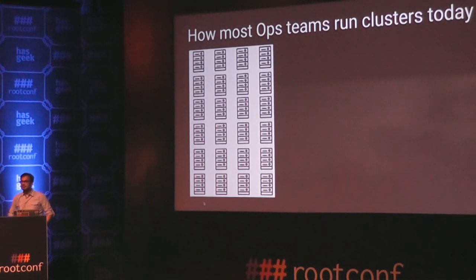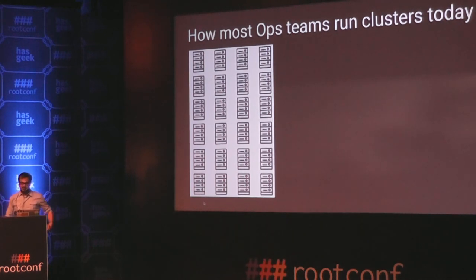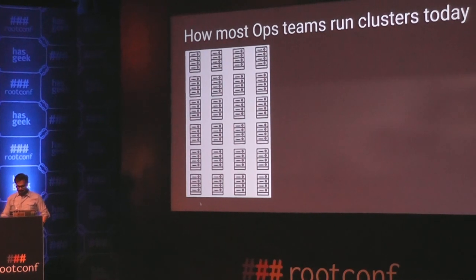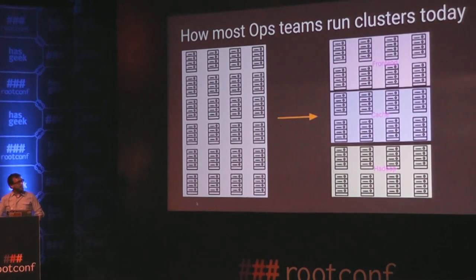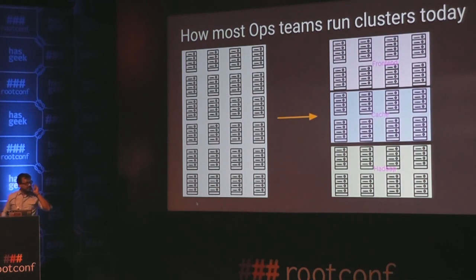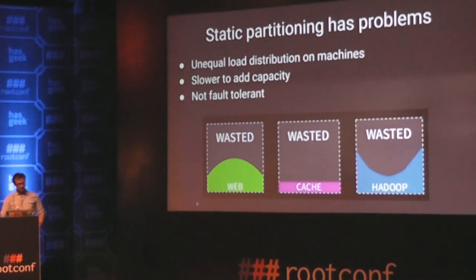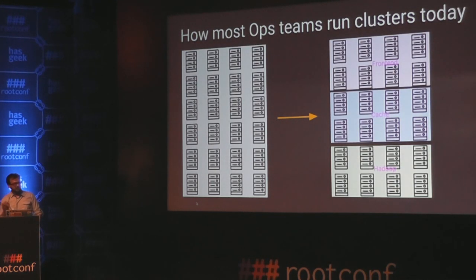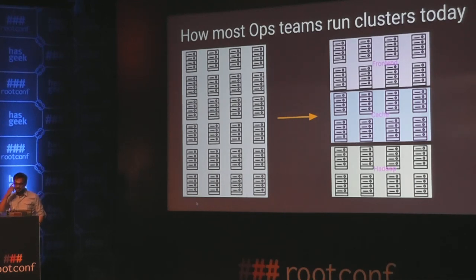This is how most operations teams run a cluster today. They start with a bunch of machines or virtual machines and then statically provision them to certain roles — for example, front-end, cache, Hadoop. This is called static partitioning: you assign a set of machines to a static role and they run a static set of services. For example, the front-end machine is always going to run Apache or a Rails application.